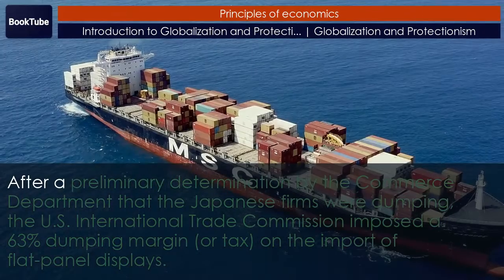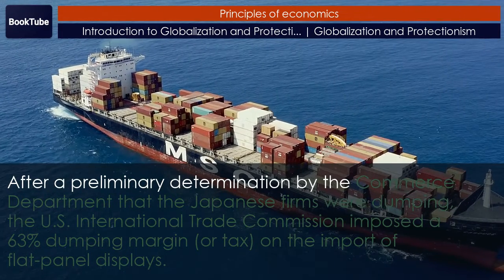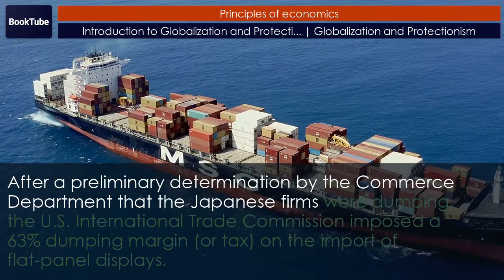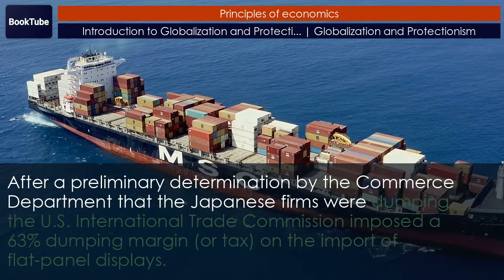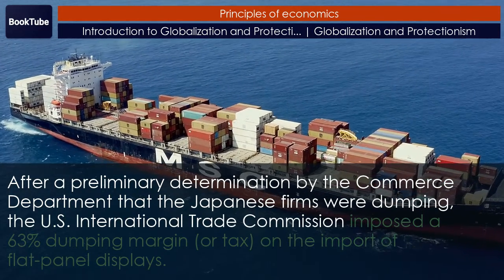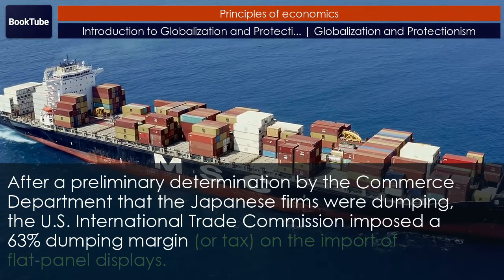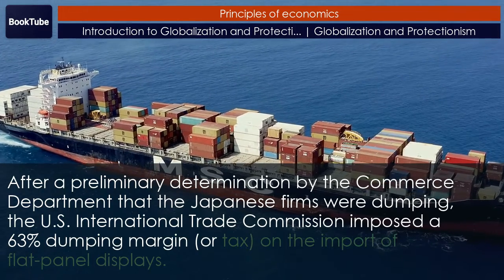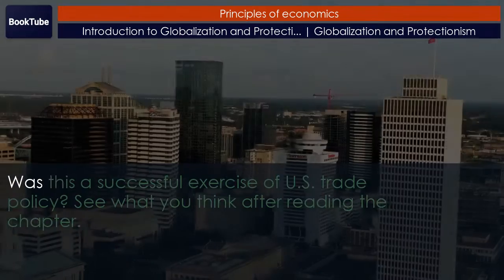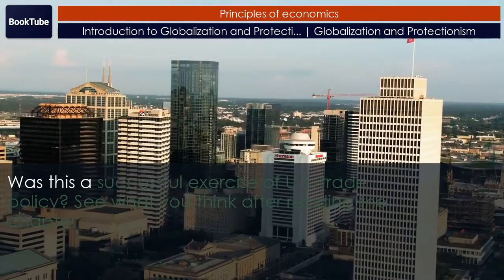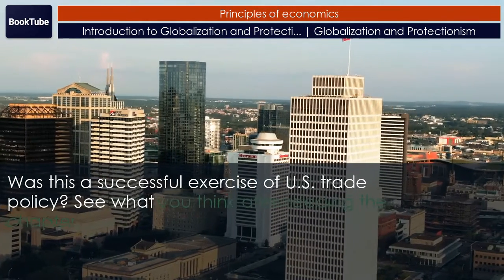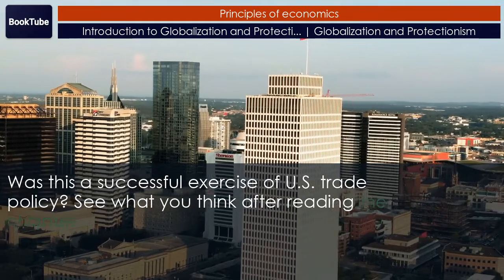After a preliminary determination by the Commerce Department that the Japanese firms were dumping, the U.S. International Trade Commission imposed a 63% dumping margin, or tax, on the import of flat panel displays. Was this a successful exercise of U.S. trade policy? See what you think after reading the chapter.